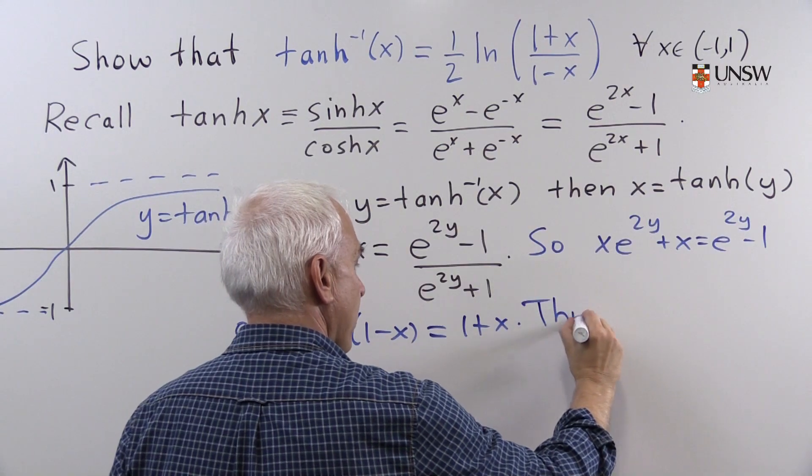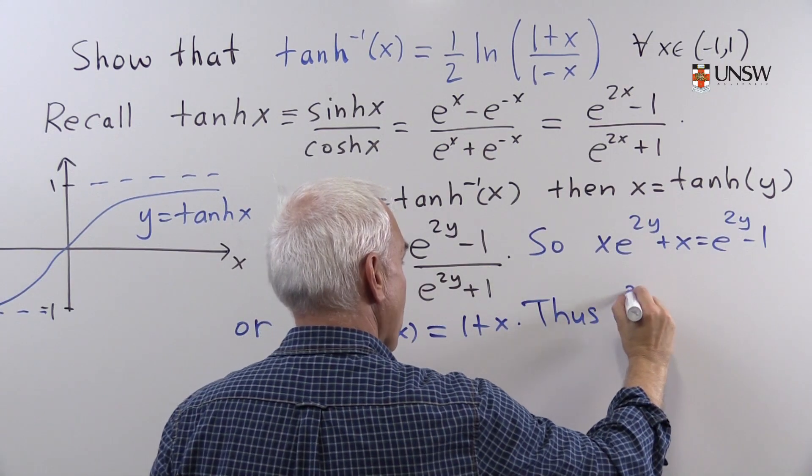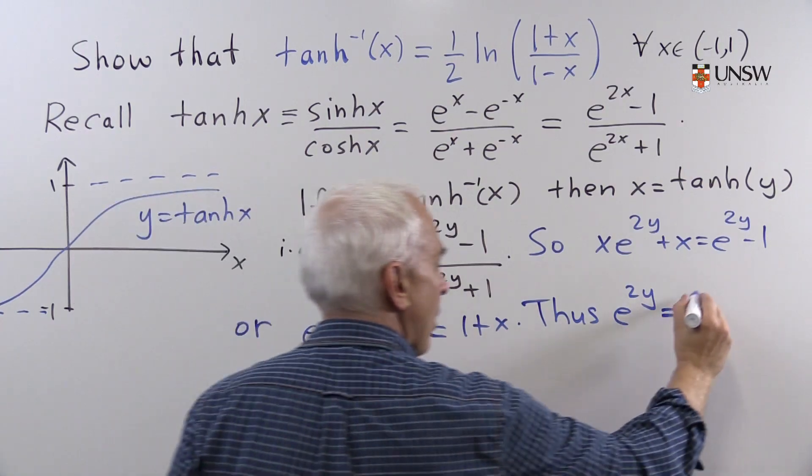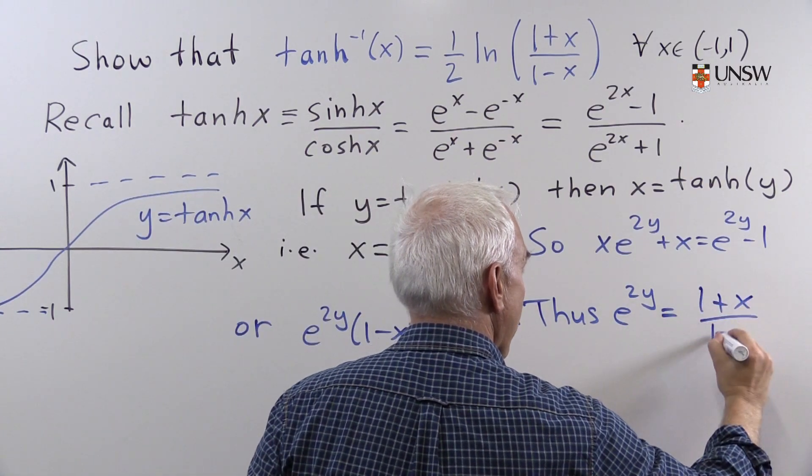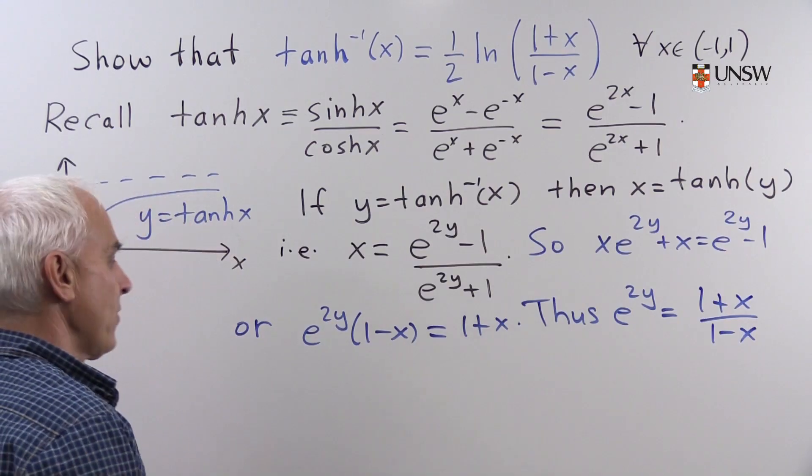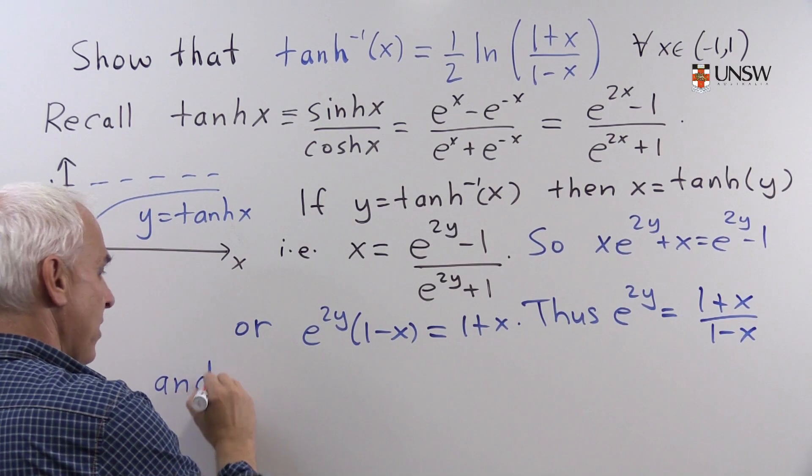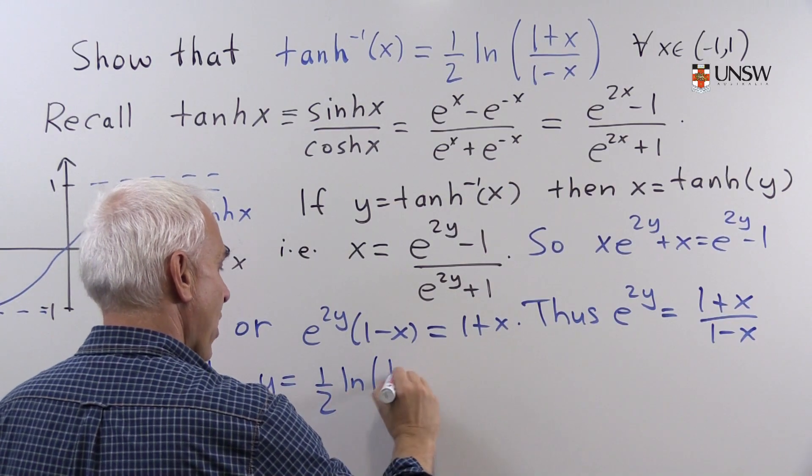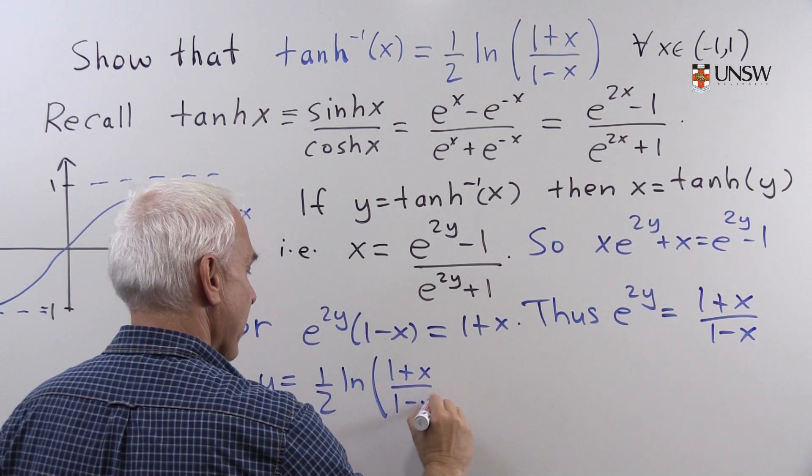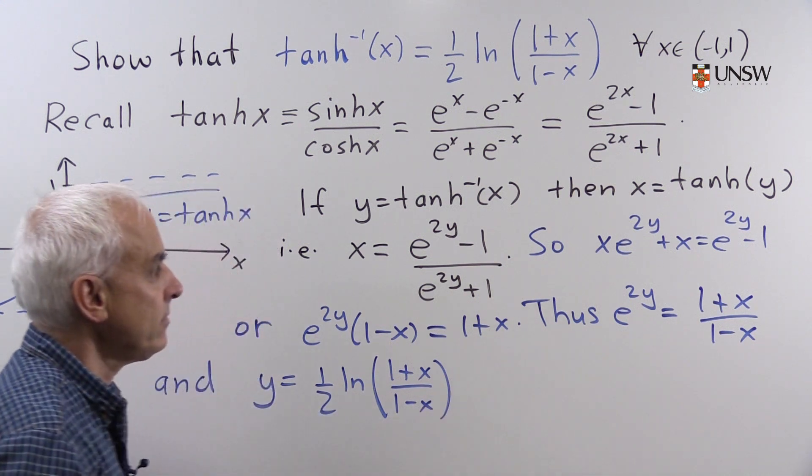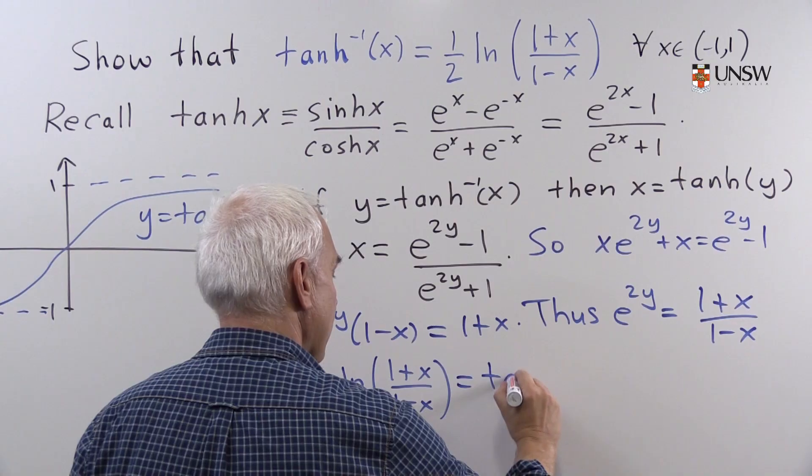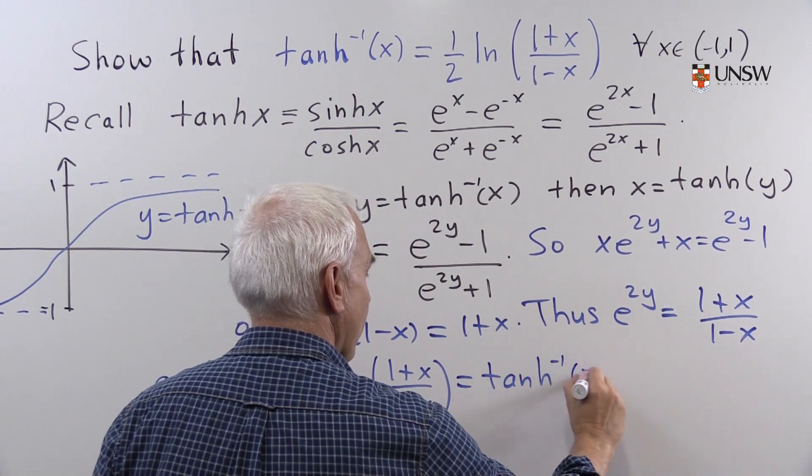And so therefore, we get that e to the 2y equals 1 plus x over 1 minus x. And so y equals 1 half of log 1 plus x over 1 minus x. And y was originally tanh inverse of x.